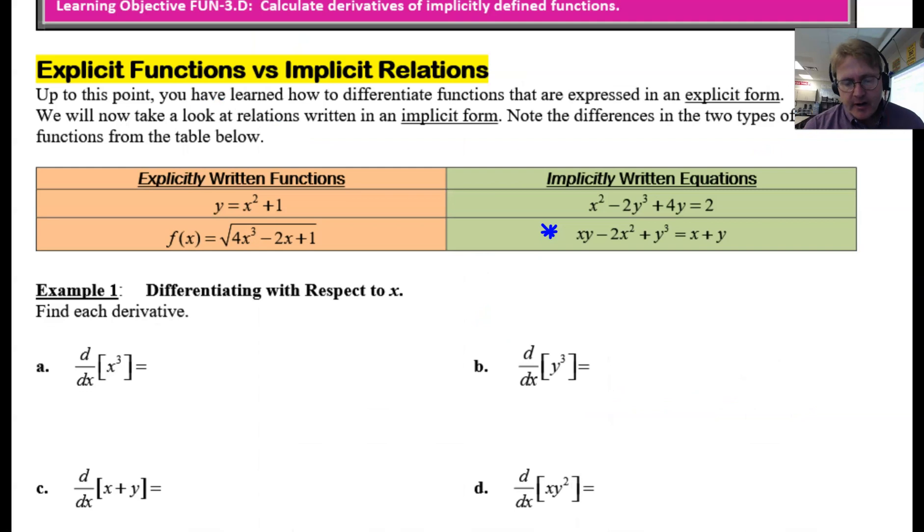So here we are taking a look at example one, where the directions are asking us to simply differentiate with respect to x. We have four parts to this problem, each of them just having a small little term that we're going to want to take the derivative of. If we look at part a, the derivative of x cubed with respect to x, well what we're going to do with this is absolutely nothing different than what you've learned before. You differentiate x cubed to get 3x squared, and boom, you're done.